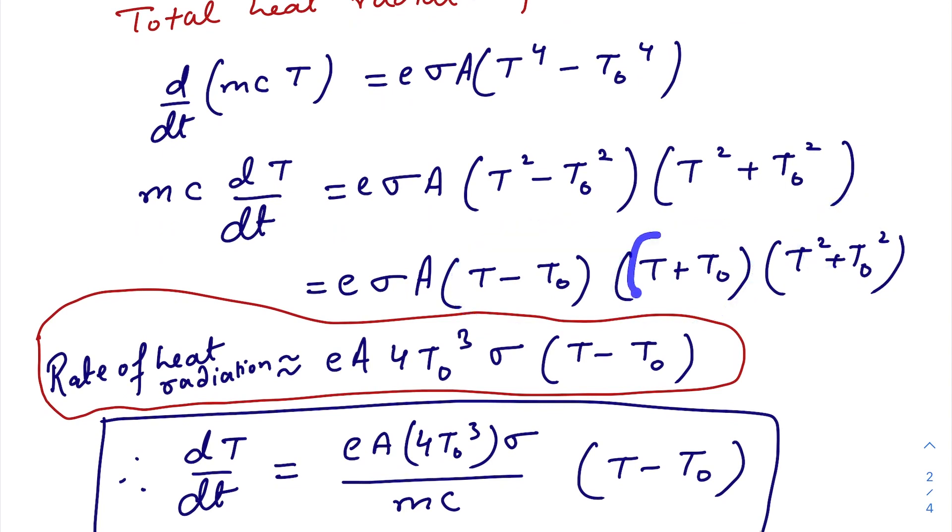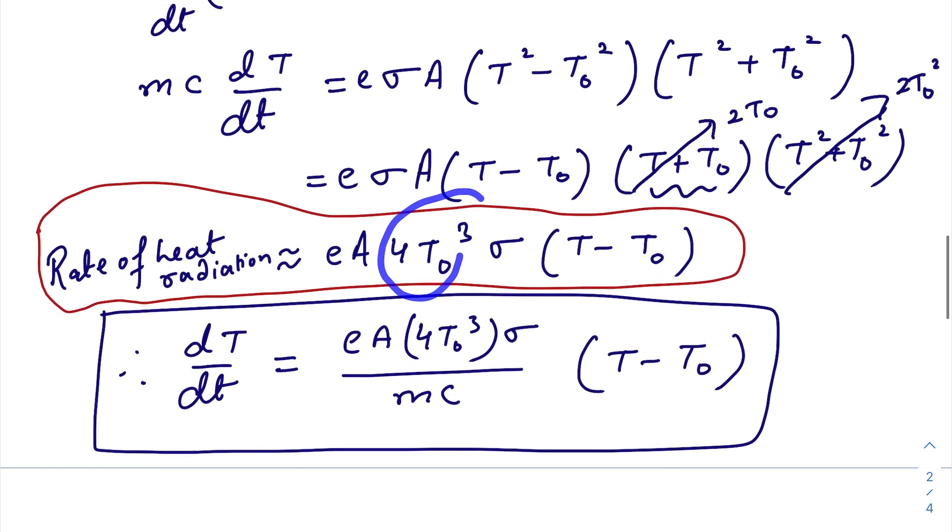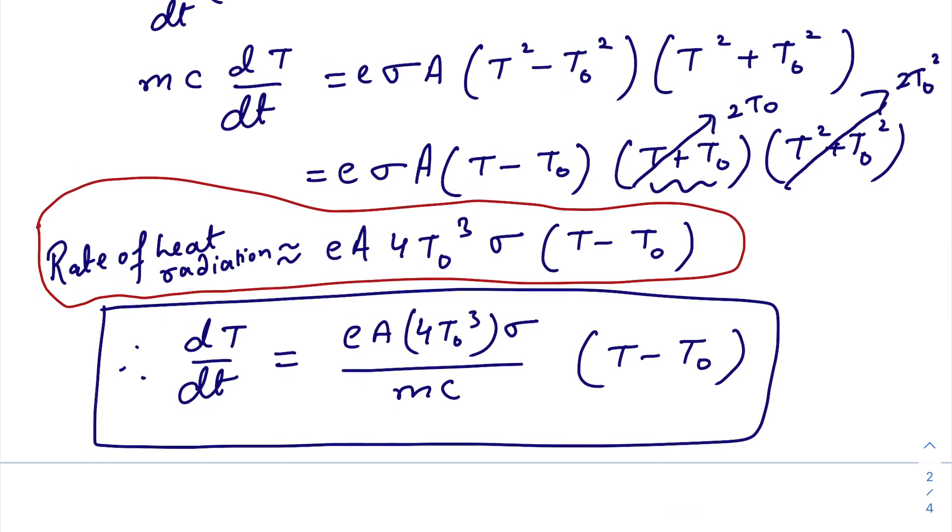See, T and T0 are pretty much very close to each other. I can say that this is nearly equals to 2 T0 and this one is nearly equals to 2 T0 square. Multiplying it, we get 4 T0 cube. This is the rate of heat radiation by the whole body.